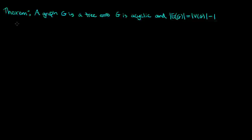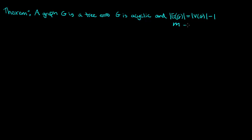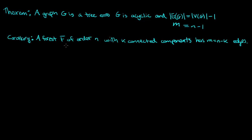Hi everyone. We saw in the last video that a graph is a tree if and only if it is acyclic and the number of edges equals the number of vertices minus 1, which we often write as m equals n minus 1. A really nice corollary of this theorem is as follows.